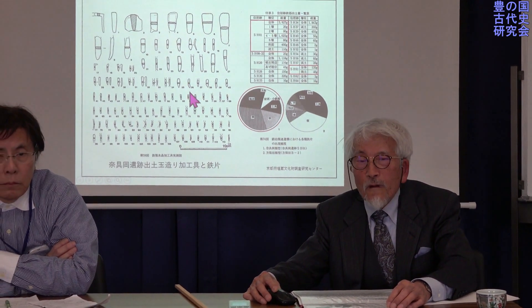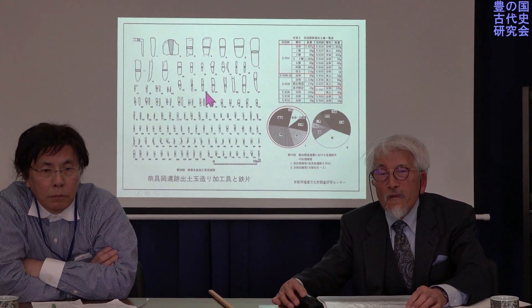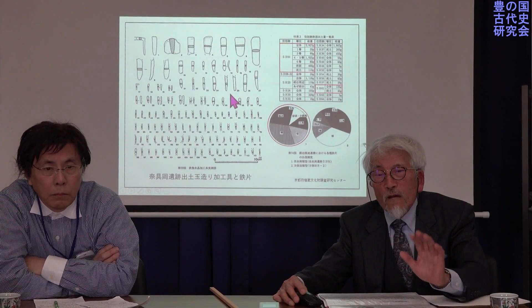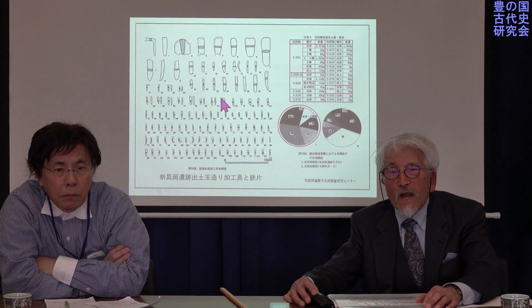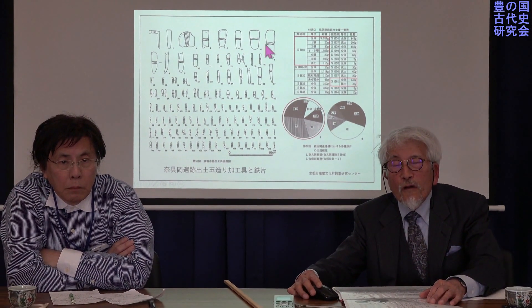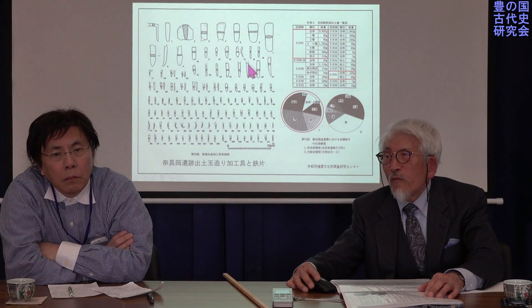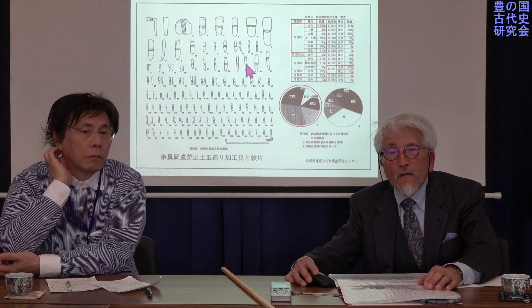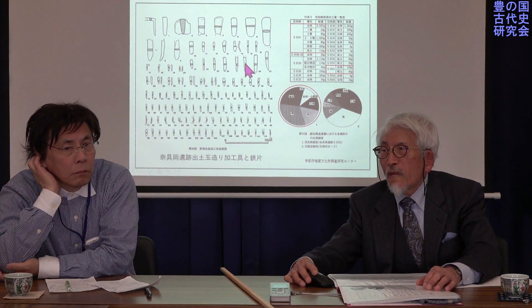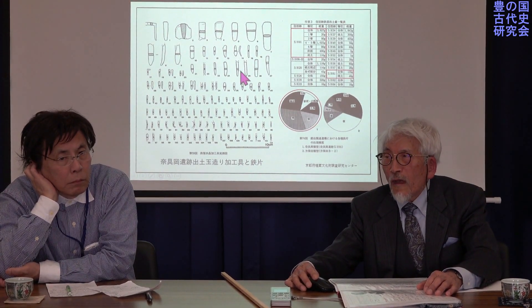これが玉造り現場であって、土砂を正確に玉を採集するために洗ったところで鉄が出てきたと。これは砂鉄です。残りの良い鉄を調べてみると、やはり先ほどから言っている鋳鉄脱炭・焼きなましの組織が出ております。弥生中期後半ぐらいですかね。脱炭技術がちゃんと関与しているわけですね。